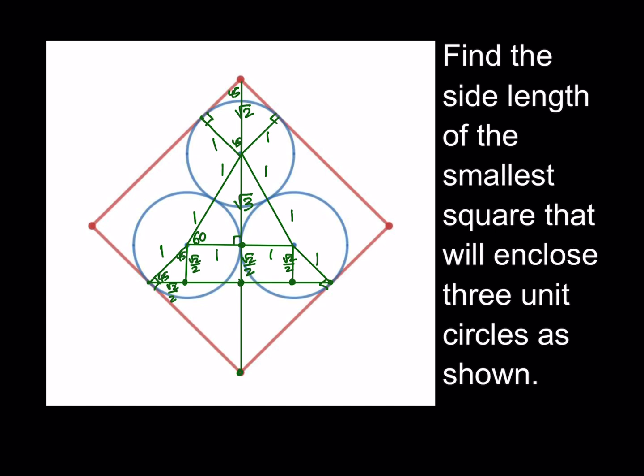Well, notice that this is 1. And this is 1 plus root 2 over 2. And this is also a 45-45-90 triangle. Therefore, this height here or length, whatever you want to call that, is also going to be root 2 over 2 plus 1. Awesome. So we were able to find all the lengths that we need. So this means that we're ready to find the side length of the small square that encloses three unit circles.